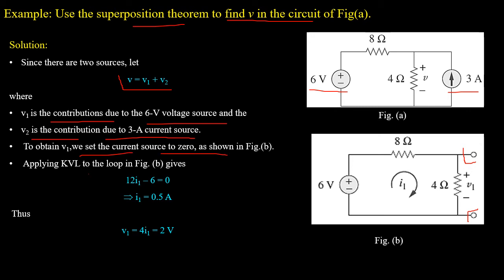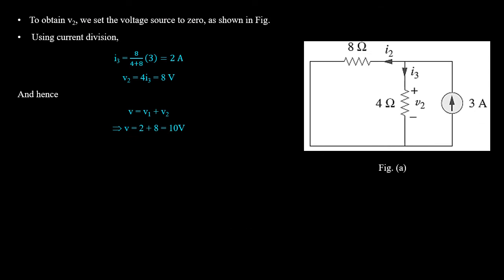Applying KVL gives 12·I1 − 6 = 0, so I1 = 0.5 amperes, which implies V1 = 4 × I1 = 2 volts. As step 3, we repeat the process for the 3 ampere current source. We set the voltage source to zero, resulting in a short circuit as shown in the figure. Using the current division rule, I3 = 2 amperes, and correspondingly V2 = 4 × I3 = 8 volts.